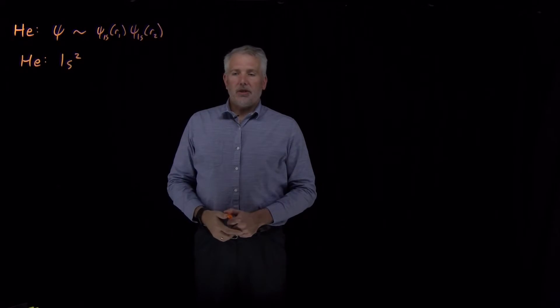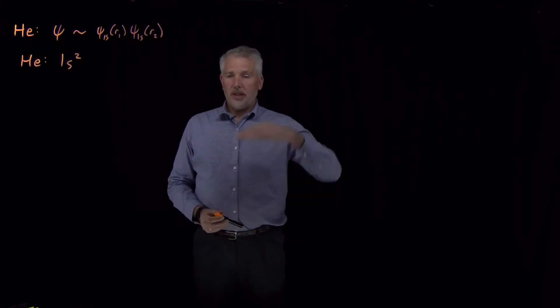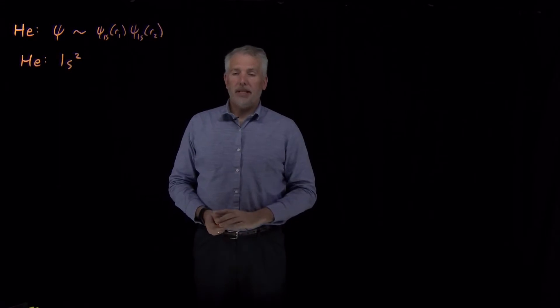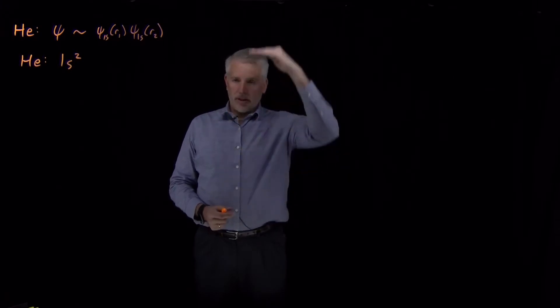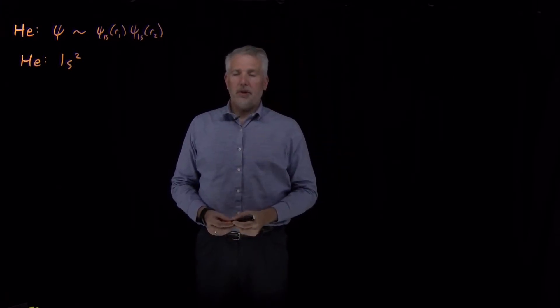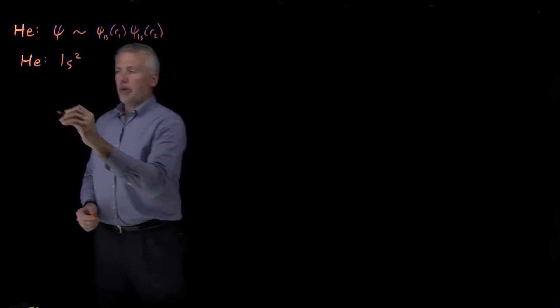It's reasonable to think that's what would happen because, as we've seen, the energy of the 2s orbital is significantly higher—many kT higher than the 1s orbital. So when we put the second electron, it's going to also occupy the 1s orbital because occupying the 2s orbital is far too high in energy to have any reasonable probability.